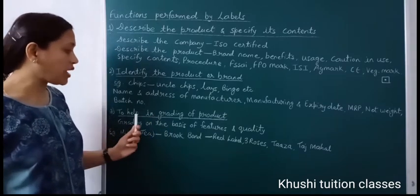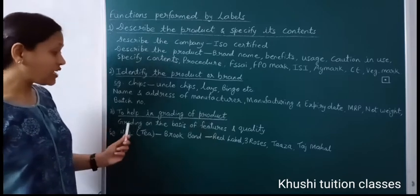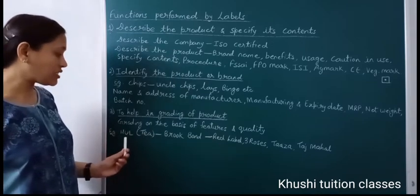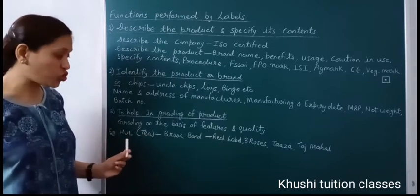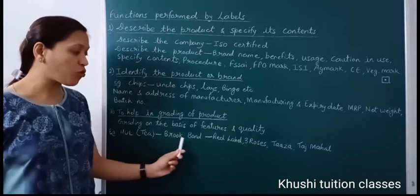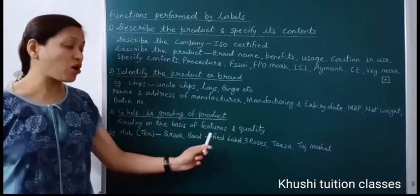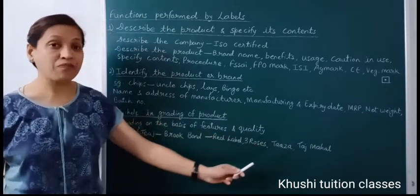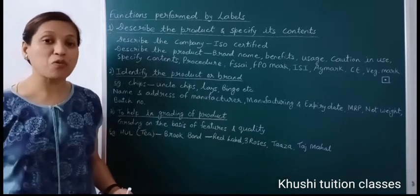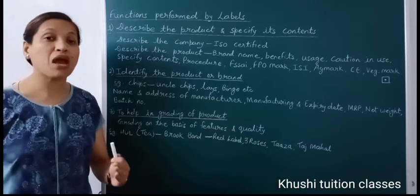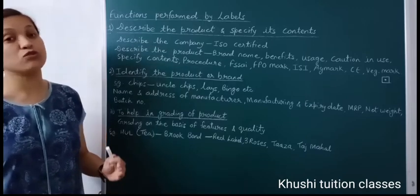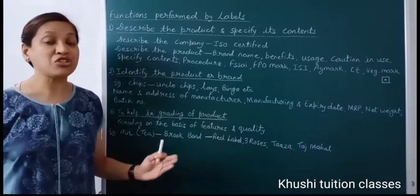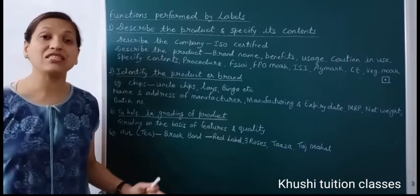Now the third function is to help in grading of the product — grading is done on the basis of features and quality of the product। For example, tea manufactured by HUL company with brand name Brook Bond — इस brand name के अंदर भी बहुत से grades हैं जैसे Red Label, Three Roses, Taaza, Taj Mahal। इसी तरह shampoo में Clinic Plus, Sunsilk — उनमें बहुत से grades हैं, hair oil में भी grades हैं — which depends on the benefits and the quality.